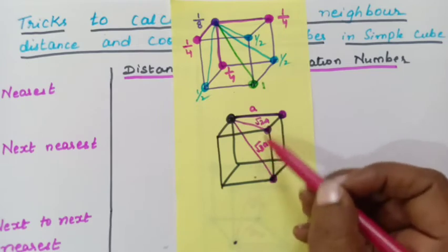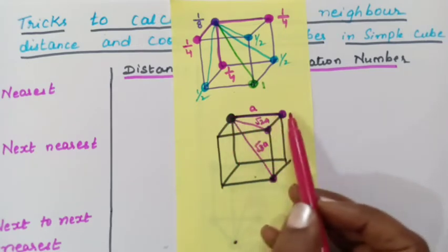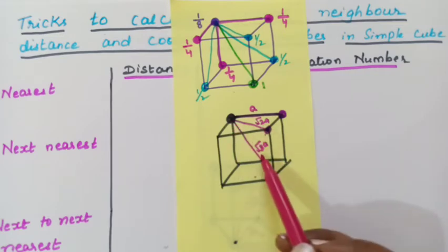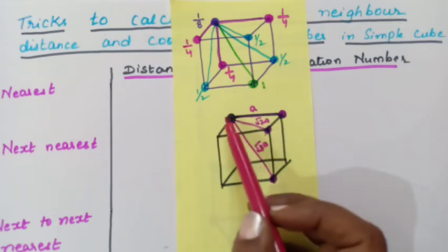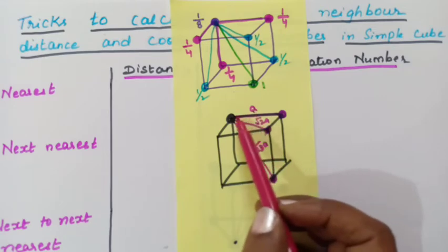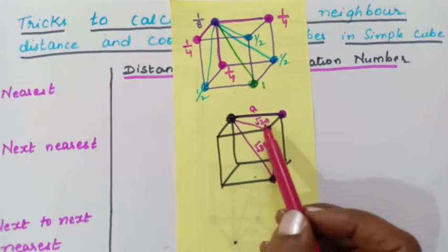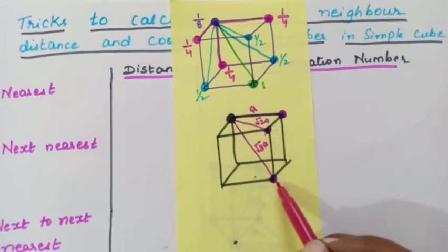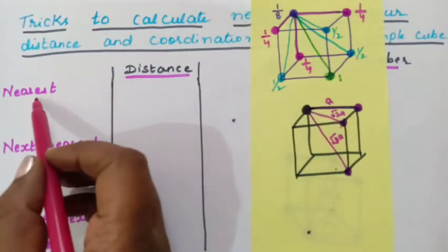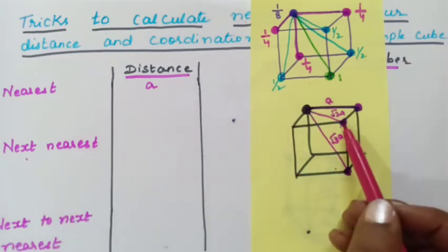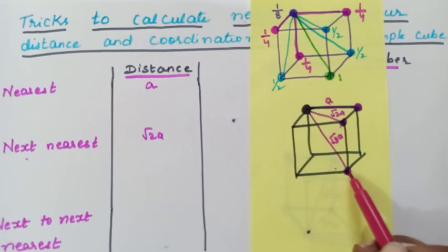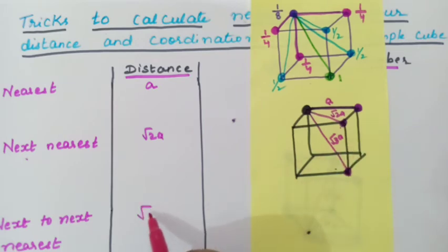So this was discussed in the first video. From here to here, the distance is called edge length A; from here to here, the face diagonal root 2A; from here to here, the body diagonal root 3A. Out of these three, which atom is closest? A is the smallest value, so that atom is the nearest atom. The next smallest is root 2A — that is the next nearest atom. And third is root 3A — the next to next nearest atom. So: nearest atom distance is A, next nearest distance is root 2A, next to next nearest distance is root 3A.